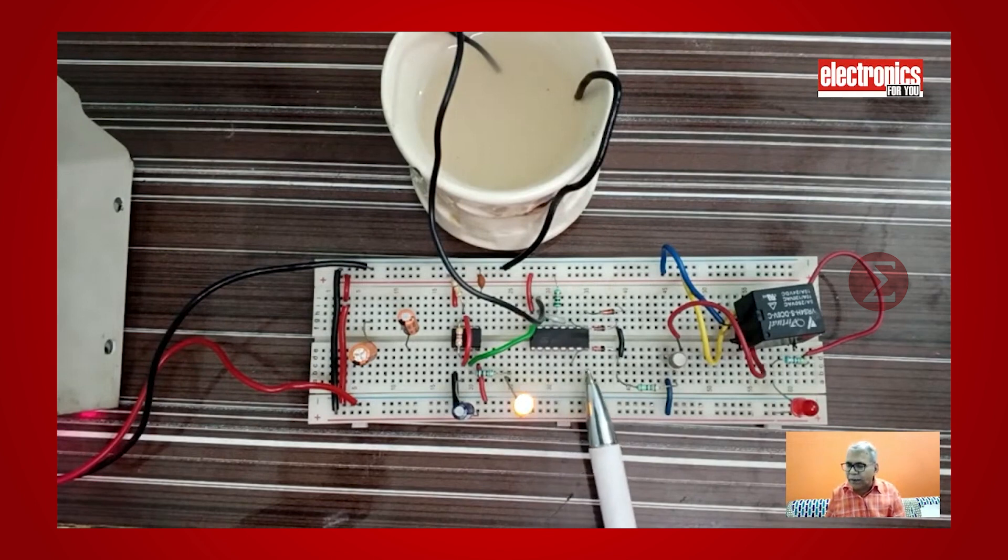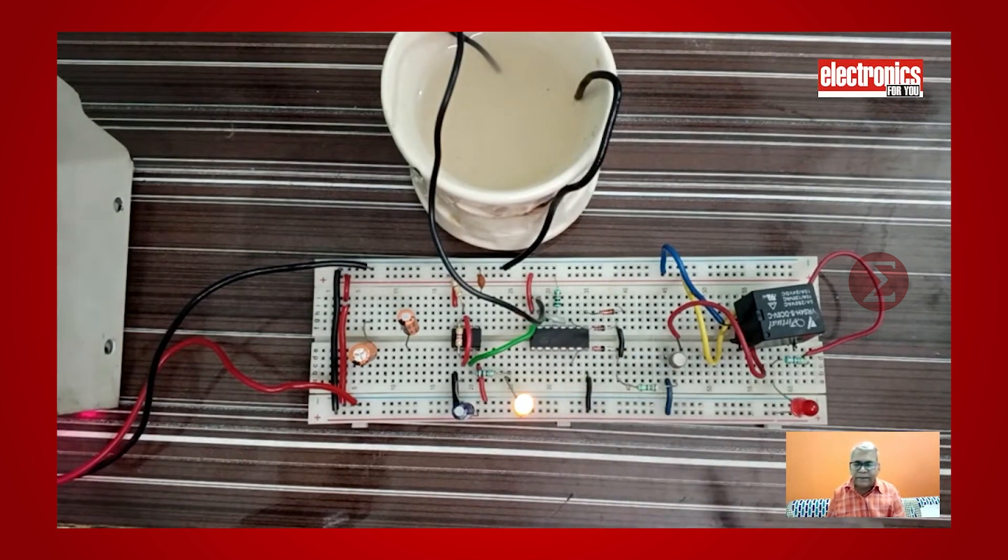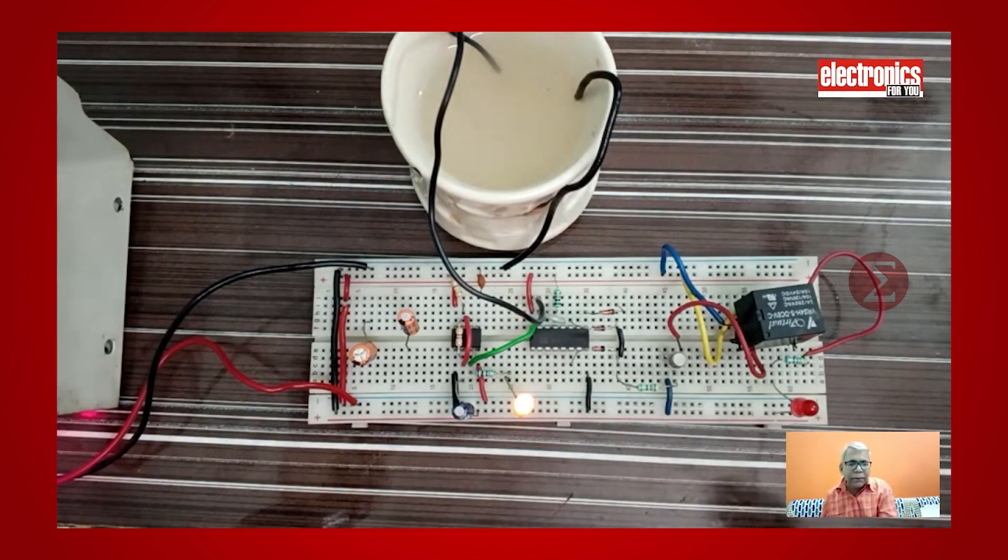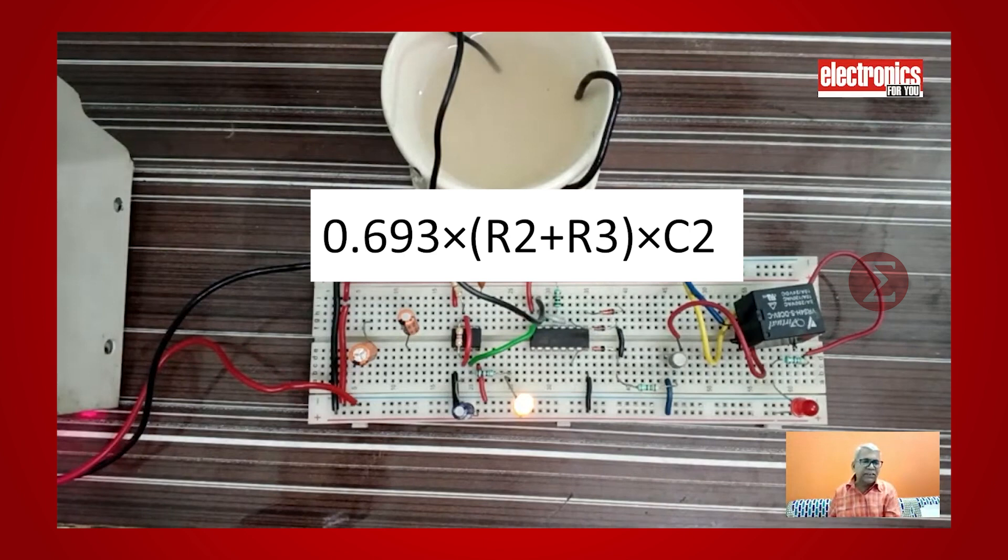Now our next point is how the cooler pump is turning on and off for a specific time interval. This time is decided by the formula 0.693 into R2 plus R3 into C2.